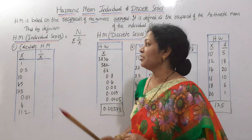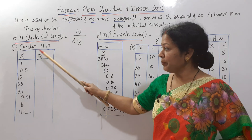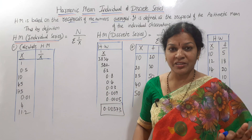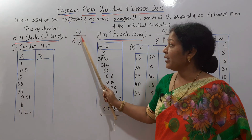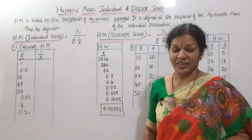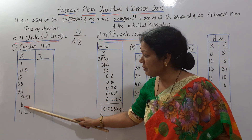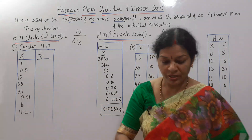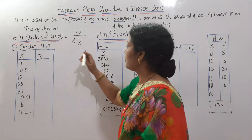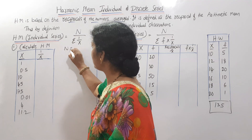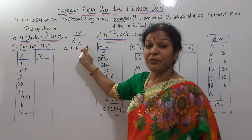Shall we enter into the problems? First we will see individual series. The problem is: calculate harmonic mean. X values are given — individual series, no frequency. As per the formula n / Σ(1/x), n means the number of observations: 1, 2, 3, 4, 5, 6, 7, 8 — so n is 8.